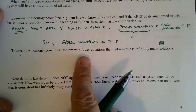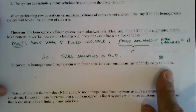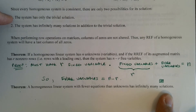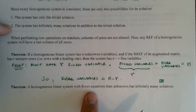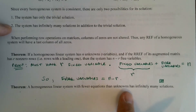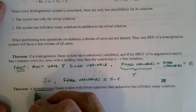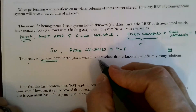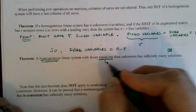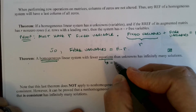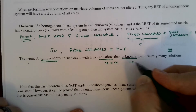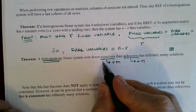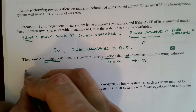A homogeneous linear system with fewer equations than unknowns has infinitely many solutions. Remember, for any homogeneous system you can have either the trivial solution only, or infinitely many solutions in addition to the trivial solution. So, if we have more unknowns than equations, we know the system has infinitely many solutions — but that's only for homogeneous linear systems. The previous theorem is going to come into play here. Let the number of equations be M and the number of unknowns be N, and since there are fewer equations than unknowns, we have M less than N.